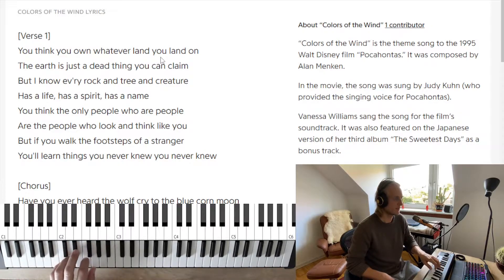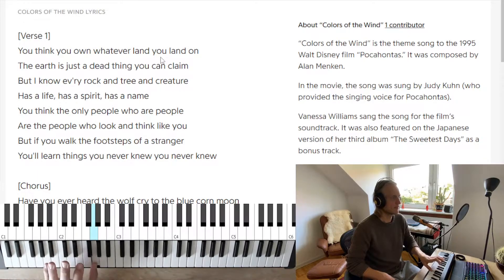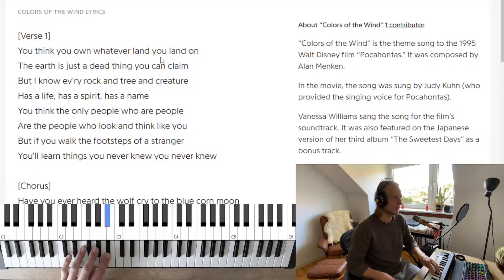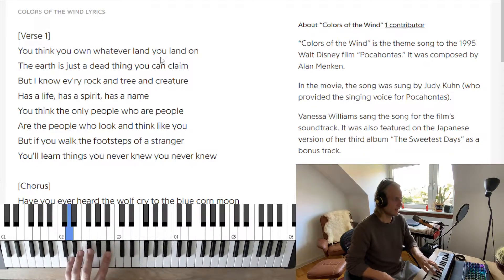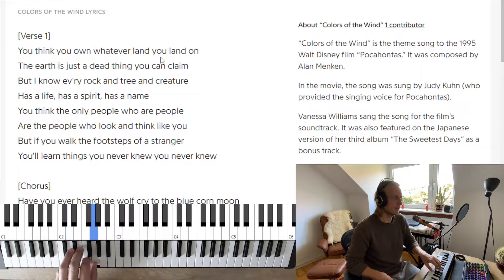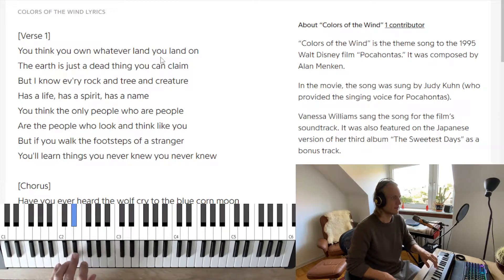There on the end we have a walk down and up to G. So we have one and two and three and four and one two three four. And one and two — 'dead thing you can claim' — two three four, 'but I know every rock and tree' — those notes lead into 'creature.'